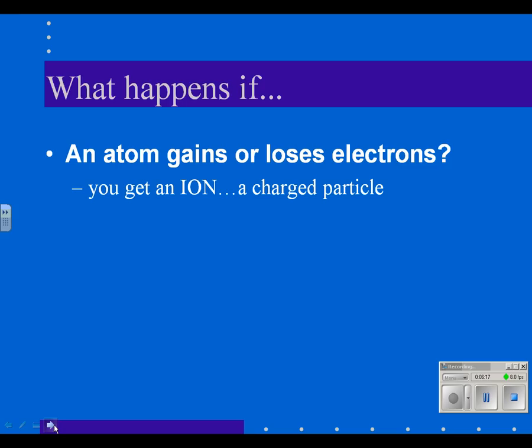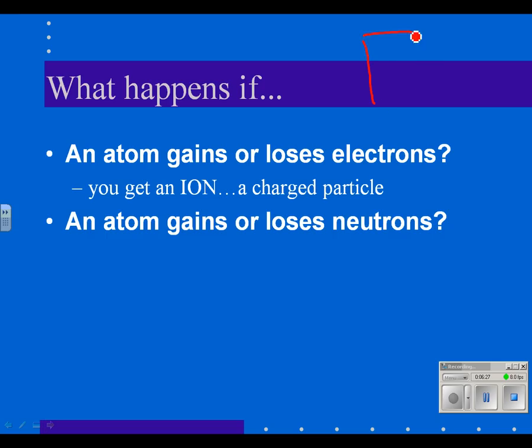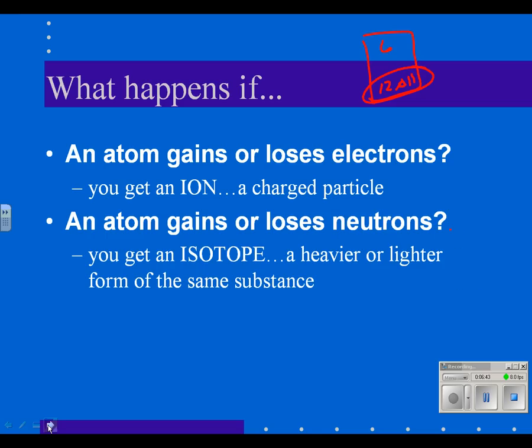What if an atom gains or loses neutrons? On the previous slide, we talked about the fact that carbon, 6 12.011, it's not a round number. That's the average atomic mass. It's because atoms have more or less neutrons sometimes. And we call that an isotope, a heavier or lighter form of the same substance. We may be referring to isotopes a little bit later on in this class.